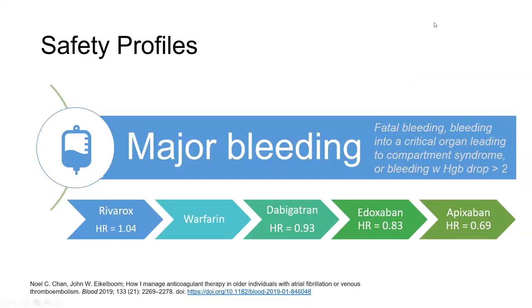Let's take a look at major bleeding first. For most landmark trials, major bleeding is defined as either fatal bleeding, bleeding that results in compartment syndrome, or most relevant to us, bleeding that results in a hemoglobin drop of greater than two points. Listed below are the different DOACs as well as warfarin with their respective hazard ratios. Recall, a hazard ratio describes the frequency with which an event occurs — major bleeding in the experimental group versus the control group. Rivaroxaban has a hazard ratio of greater than one, meaning patients anticoagulated with rivaroxaban had higher rates of major bleeding than patients anticoagulated with warfarin. Meanwhile, apixaban has a hazard ratio of less than one — 0.69 — meaning patients anticoagulated with apixaban had lower rates of major bleeding compared to warfarin.